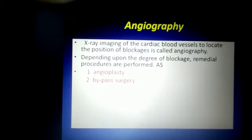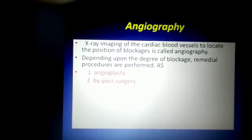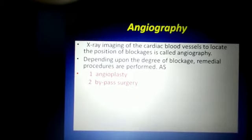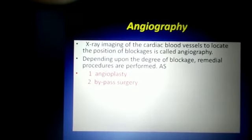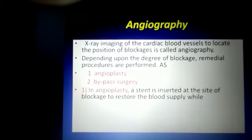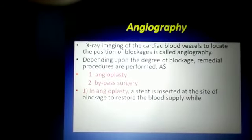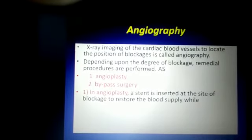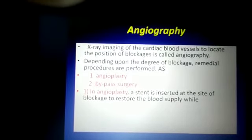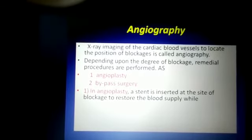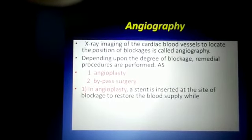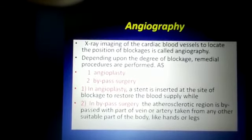One can undergo angioplasty or bypass surgery. In angioplasty, a stent is inserted at the site of blockage to restore the normal blood supply. If the condition is more serious — if the number of blockages is greater or the blockages are located at various regions of the coronary artery — then a second procedure is performed, which is called bypass surgery.